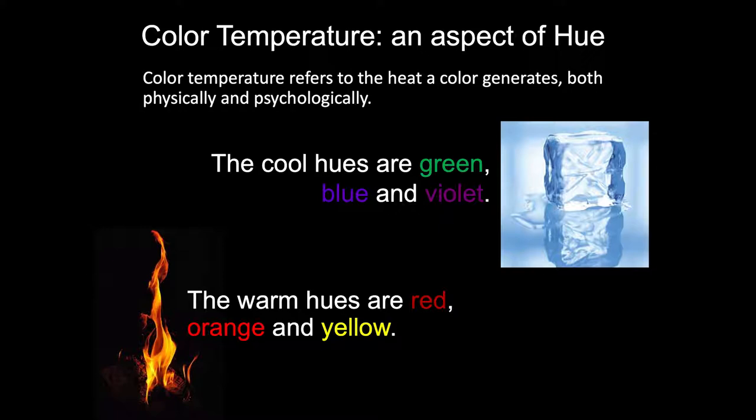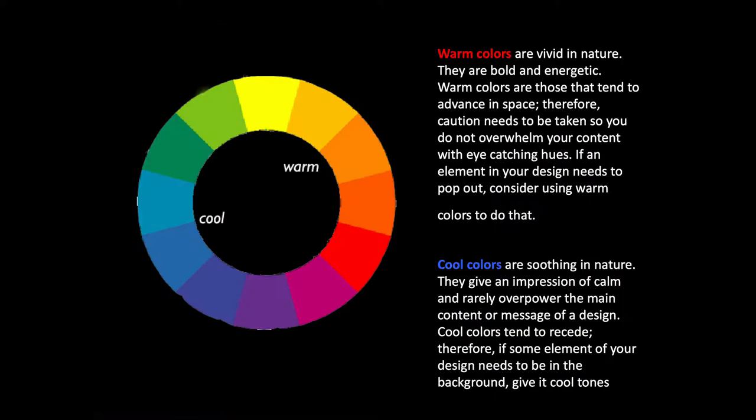Color temperature refers to the heat of a color, both in a metaphorical sense — its physical heat — and also the psychological heat that it gives off. Cool colors are the colors of physical objects that we think of as being cool, like ice and water. Warm hues are the reds, the oranges, the yellows — the colors of flame and glowing stove elements and so forth.